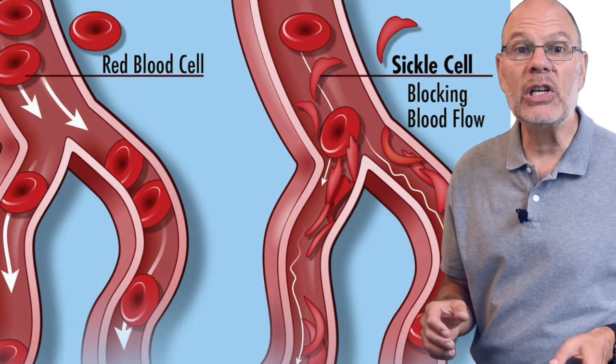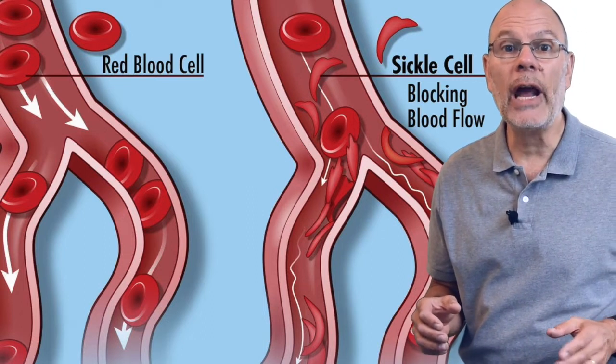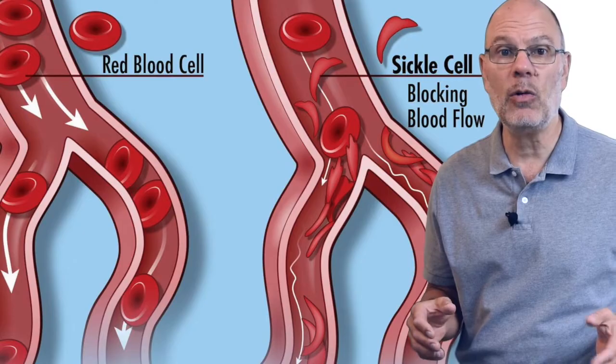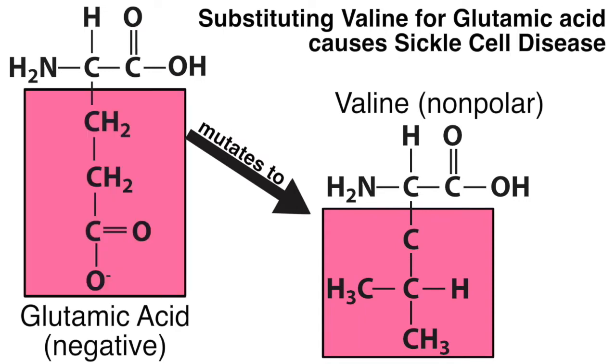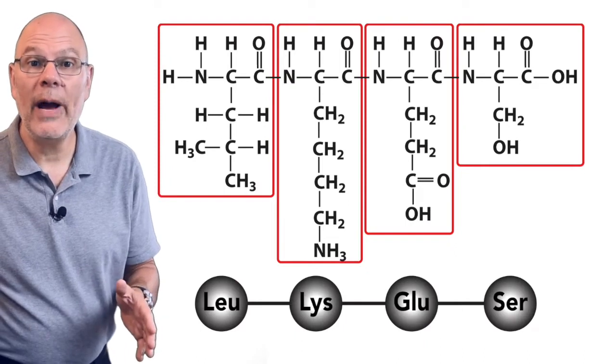But if you change the type of amino acid, that can be a very big deal. The inherited genetic disease sickle cell anemia, a blood disorder characterized by tissue damage and pain crises, is caused by a single mutation that substitutes valine, which has a nonpolar side chain, for glutamic acid, which has a negative side chain. Proteins are polymers of amino acids.